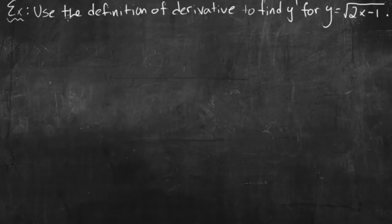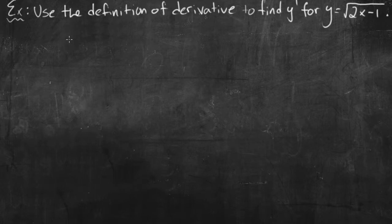Hey guys, Mr. B here again, bringing you another math video. This one I'm going to use the definition of derivatives to take the derivative of a radical. So this guy over here, y is equal to the square root of 2x minus 1.